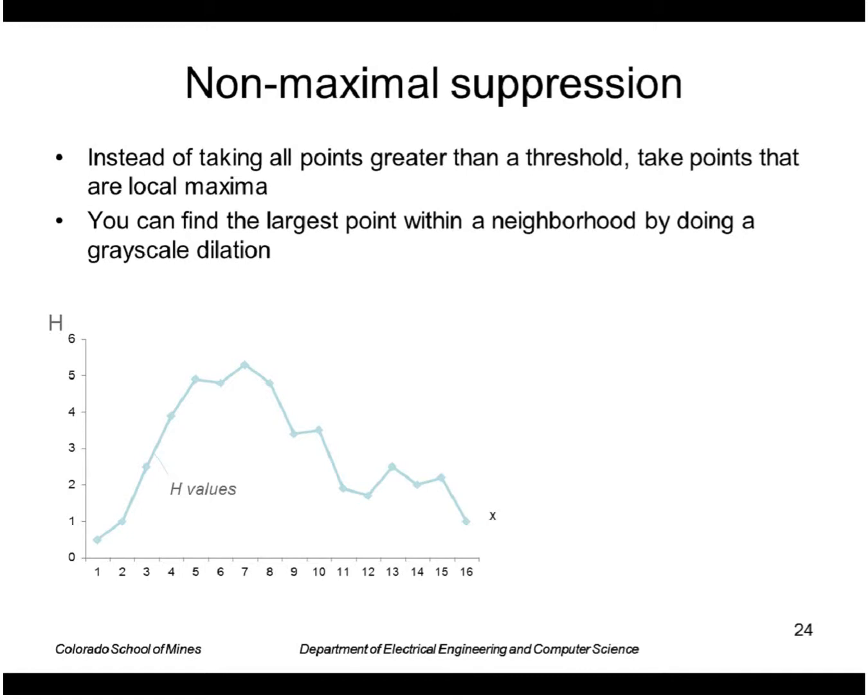We can find the local maxima by doing a grayscale dilation. So if this is our Hough space with the scores vertically, this is a slice through that, say horizontally. A grayscale dilation takes the local maximum within the size of the structuring element. So this would be the dilation of the values of H with a structuring element of, say, width 5.